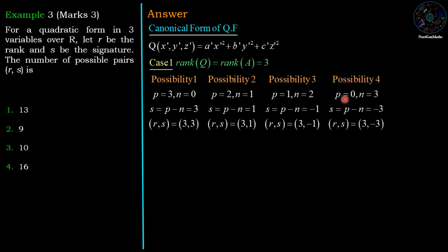The fourth possibility for R = 3 is p = 0 and n = 3, meaning all terms are negative. Signature S = p − n = 0 − 3 = −3, giving the pair (3, −3). So if rank equals 3, we have 4 possible pairs for (R, S).